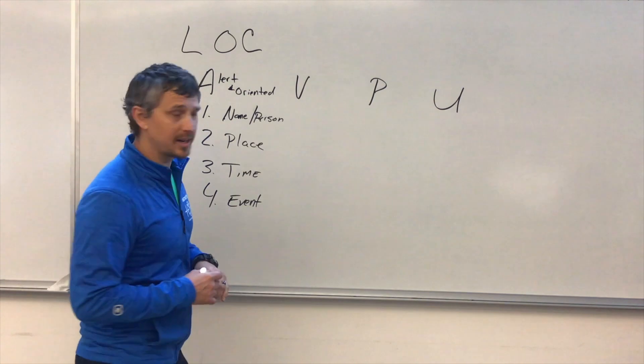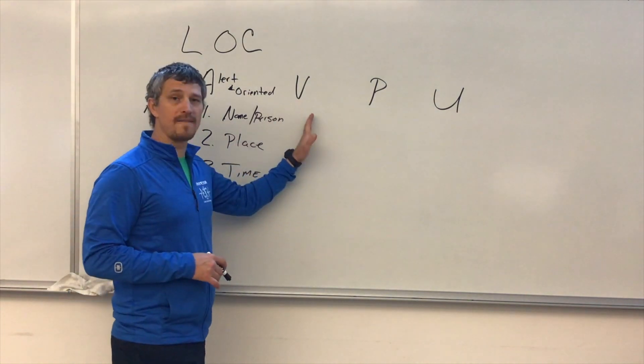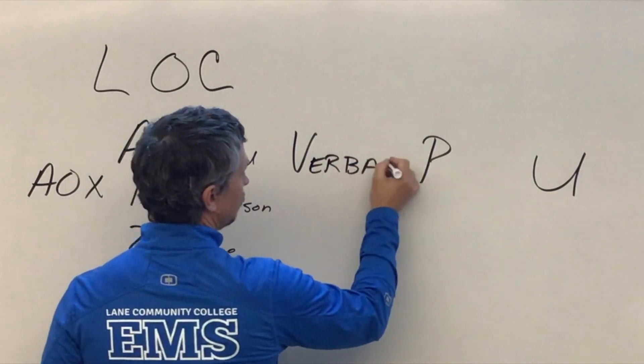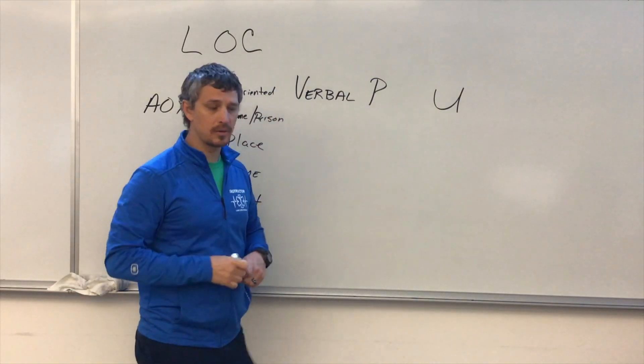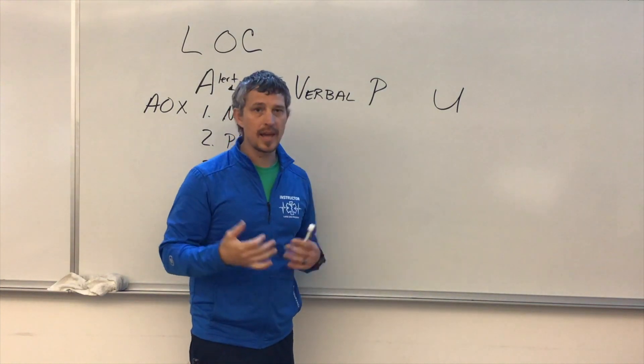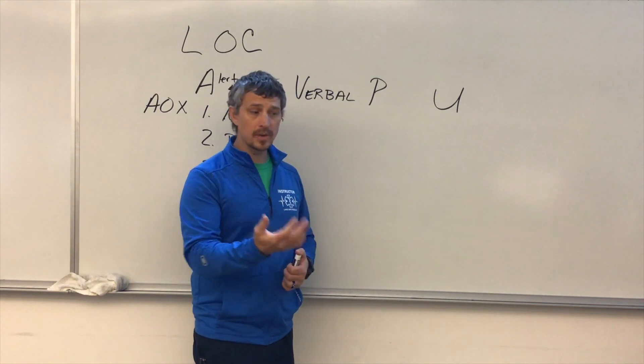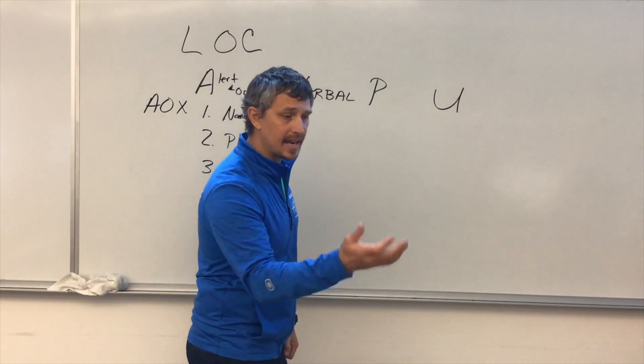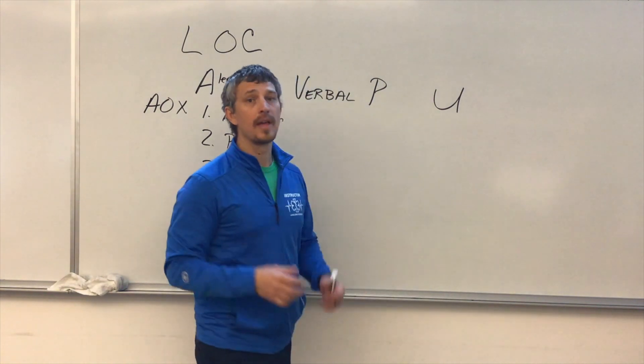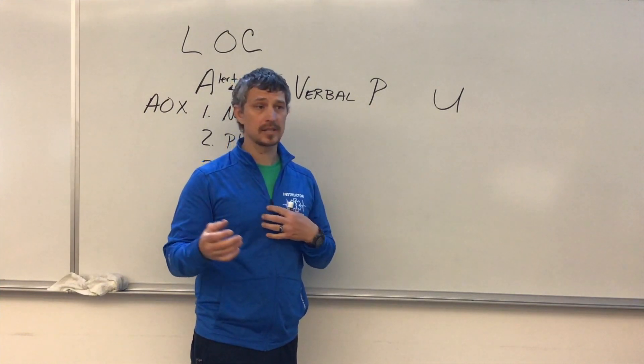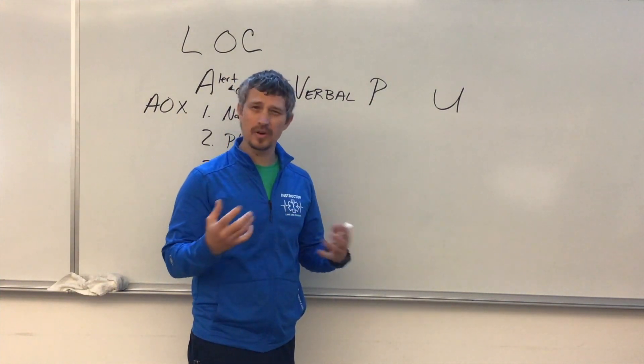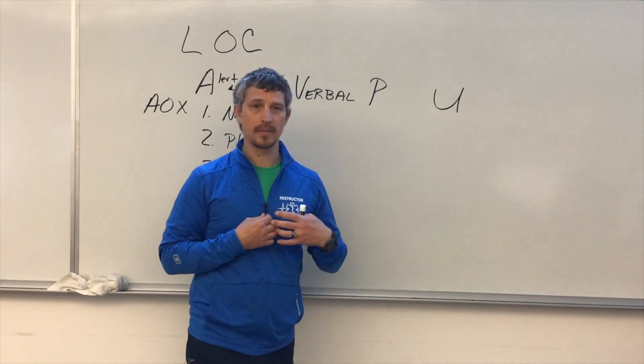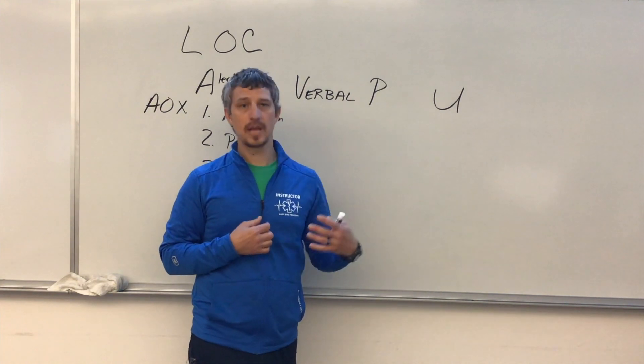If our patient is not Alert and Oriented, we're going to move to our V. Our V is going to stand for Verbal. So this is our patient where their eyes are closed, they're sitting, they're laying, whatever it is, they're not responsive when we walk up. And we give them that verbal stimulus—hey, hey, can you hear me? Hey!—they open their eyes and they can look at us. Maybe they can talk to us. They're not really there, but we get that verbal response from them when we get that verbal cue. They respond.